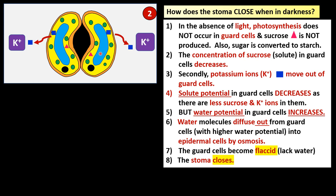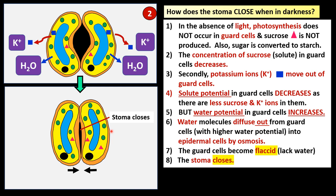Overall, the solute potential in the guard cells decreases as there are fewer sucrose molecules and potassium ions. Water potential in the guard cells increases instead — meaning there is a higher concentration of water in the guard cells than in the surrounding epidermal cells. So water molecules diffuse out from the guard cells into the epidermal cells by osmosis. The guard cells lose water, become flaccid, turgor pressure decreases, the outer cell wall no longer curves outward, and the stoma closes.